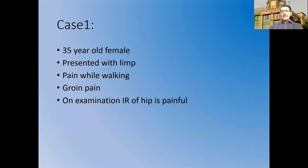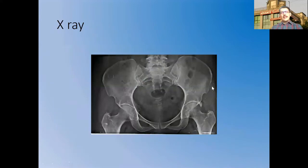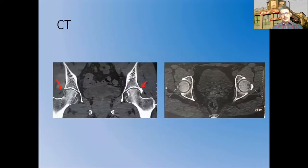The first case is a 35-year-old female who presented with limp, pain while walking, and groin pain. On examination, internal rotation of the hip was painful. X-ray showed a characteristic finding: a large paralabral calcification on the left side extending from the labrum to the neck of the femur. CT confirmed a large calcification — similar to calcific tendinitis in the shoulder joint — and the patient was in intense pain.